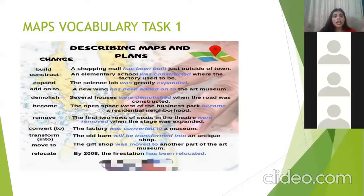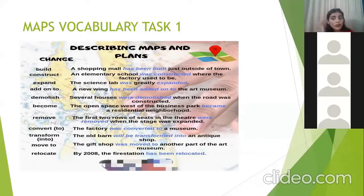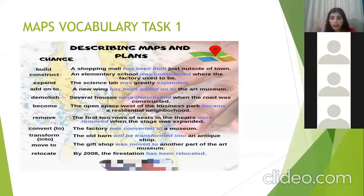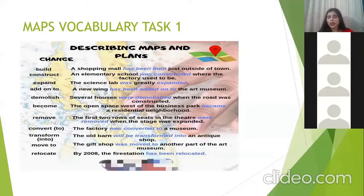They have expanded it — add on to. A new wing has been added on to the art museum. So whenever you are going to do your IELTS writing task 1, specifically of maps, if you're able to see that there were, for example, two rooms, and they have added one more room to it, or maybe two shops and they've added two or three more shops to it, the word you need to use is 'add on to.' In this scenario, a new wing has been added on to the art museum — the first was the art museum, and they also added a new wing.